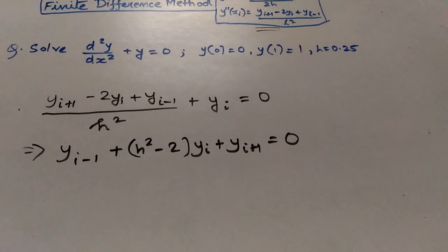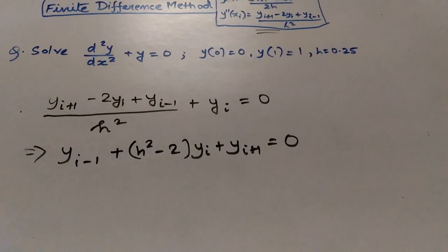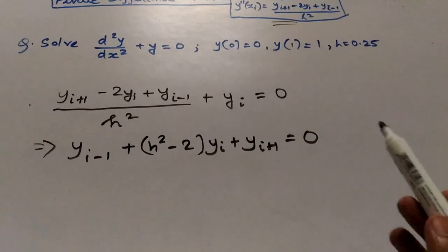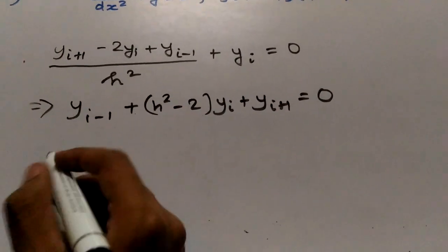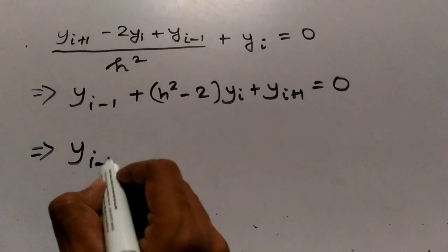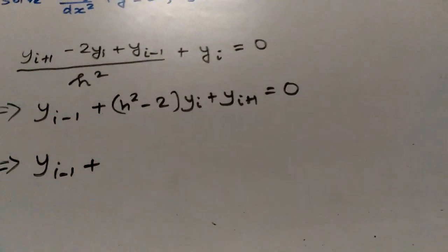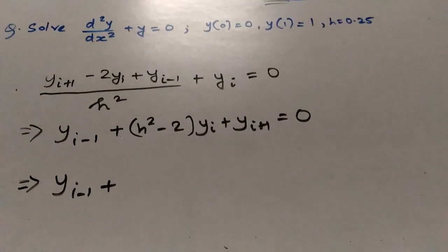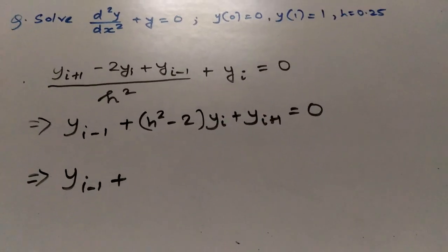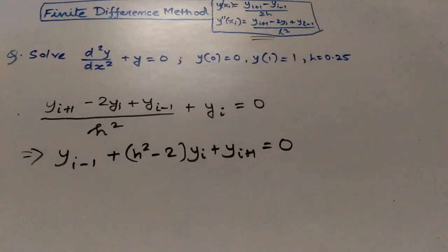Now I will put the value of h in this equation and then I will get the final equation. First of all, I will put the values of i here.